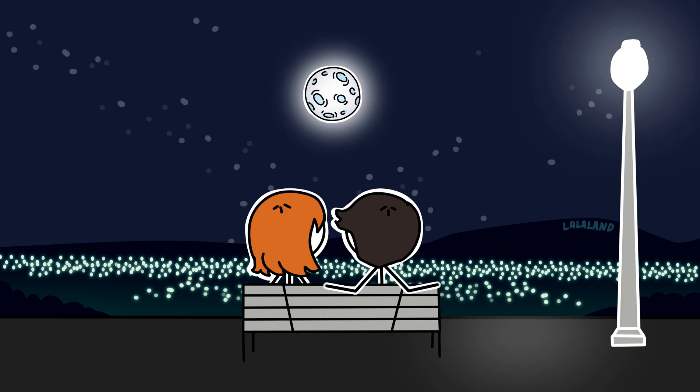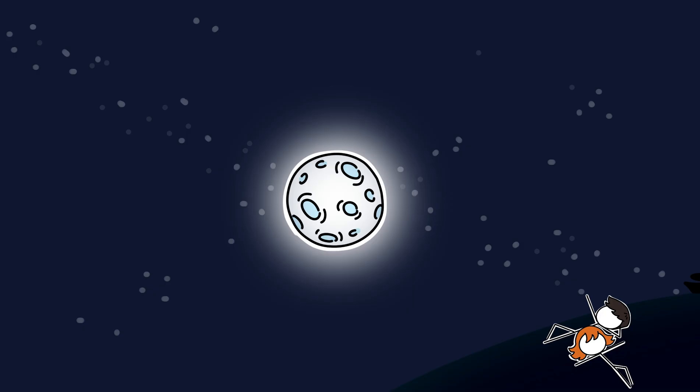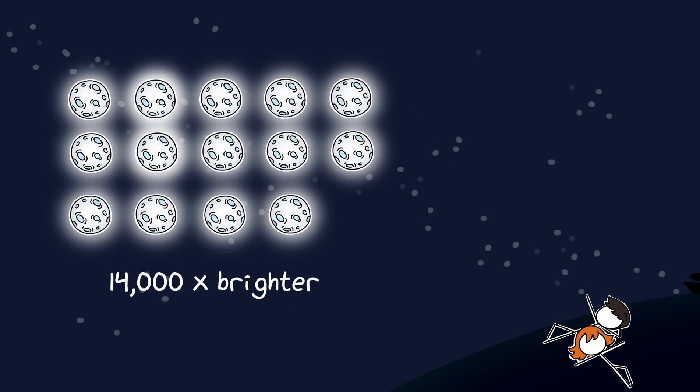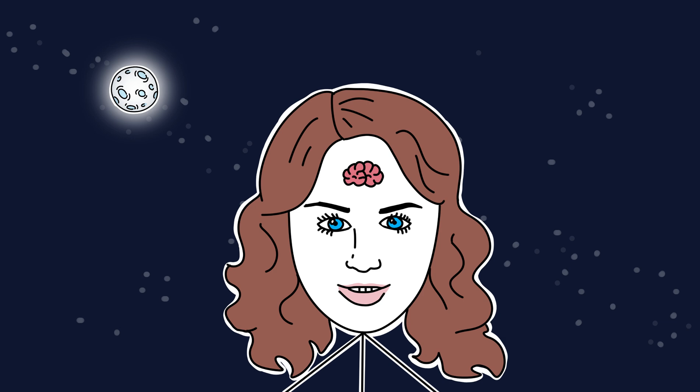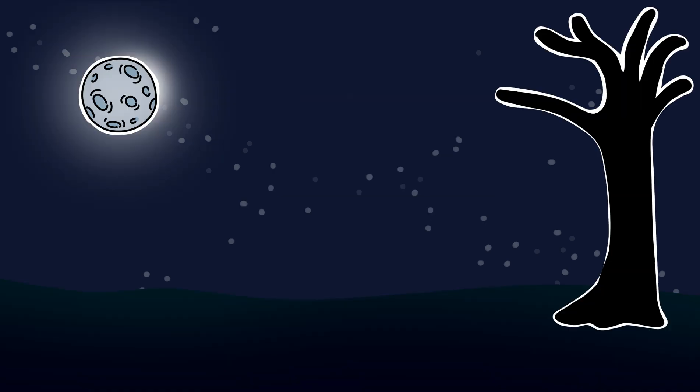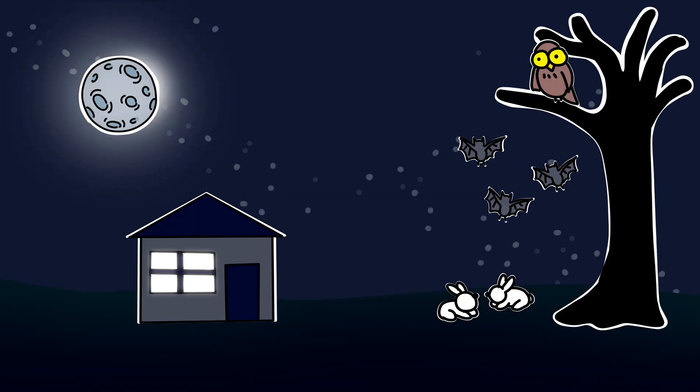First things first, it'd get way darker. The full moon reflects sunlight with a brightness of about 0.25 lux, 14,000 times brighter than Venus. Our eyes and brains have adjusted to the moon's light, helping regulate nocturnal predators, prey, and even our sleep cycles.